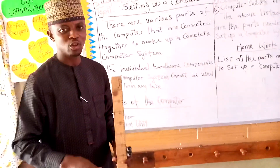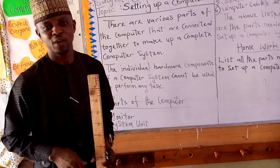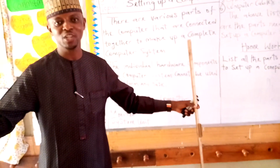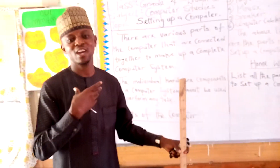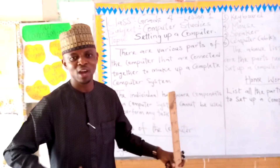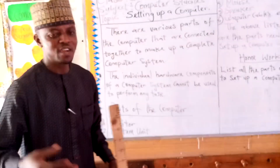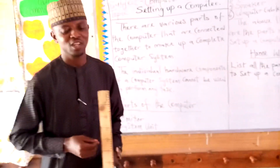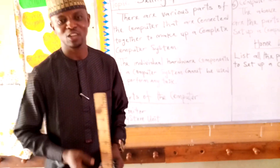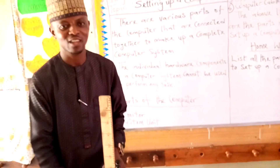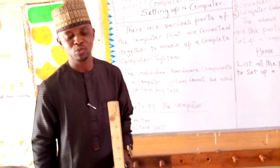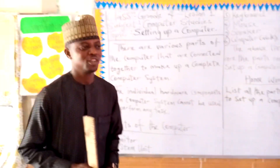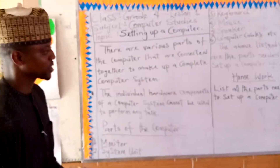In the human body, we have parts like the hand, the head, the neck, the mouth, the stomach, the legs, and all that. If any of these parts has any issue — for example, one of the legs is cut off or the hand — there is definitely a name we call such a person.